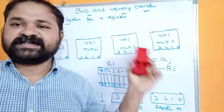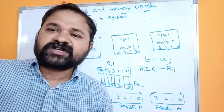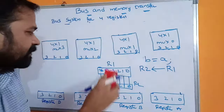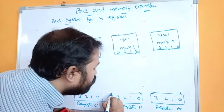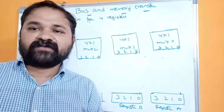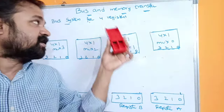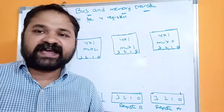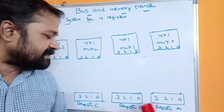We can overcome this problem with the help of a common bus system. A bus is mainly useful to transfer information from one register to another register in a less expensive manner. The common bus system can be implemented in two approaches: the first approach uses multiplexers, and the second approach uses decoders with a three-state buffer (tri-state buffer). In this video, we discuss the first approach using multiplexers.